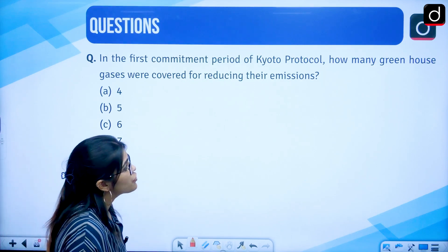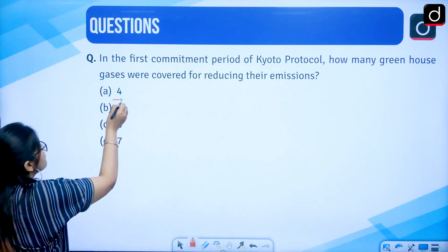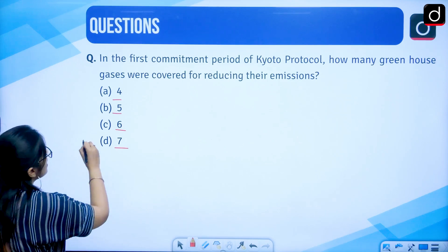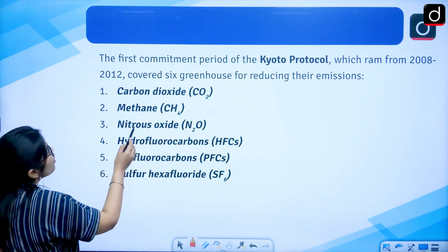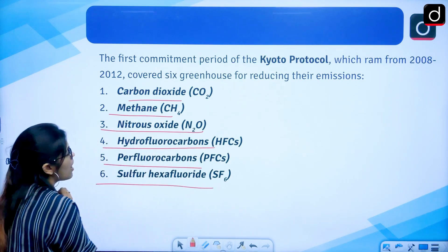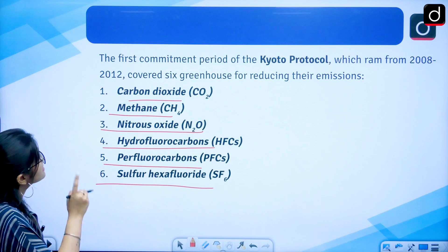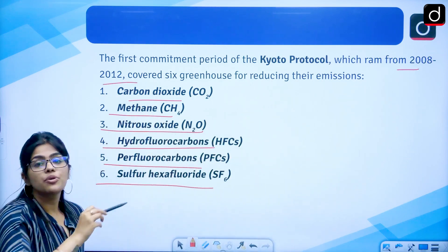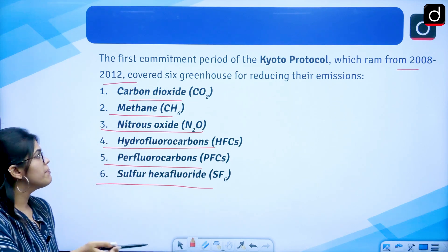Now the first PYQ: In the first commitment period of the Kyoto Protocol, how many greenhouse gases were covered for reducing their emissions — 4, 5, 6, or 7? The answer is 6. There are 6 greenhouse gases: carbon dioxide, methane, nitrous oxide, hydrofluorocarbons, perfluorocarbons, and sulfur hexafluoride. The first commitment period ran from 2008 to 2012, and the second period was decided at the Doha meeting, hence the Doha Amendment.